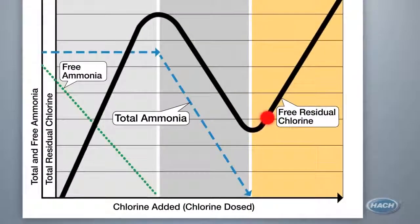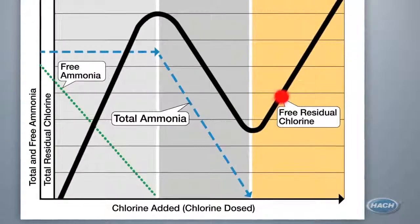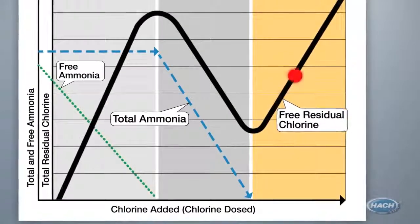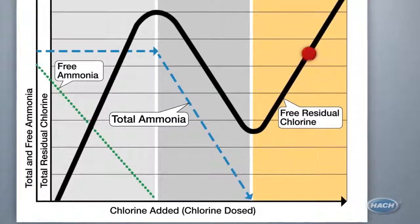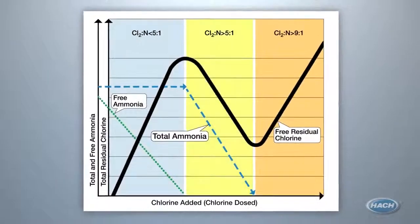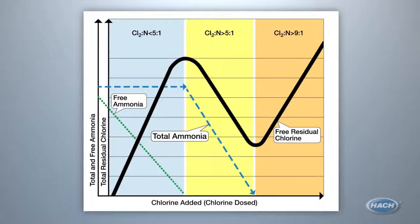In zone three, you will see no ammonia and only chlorine, and your free and total chlorine values should be very similar or match. If you know the key parameters to look for in each section, it is easy to determine where you are on the chloramination curve.